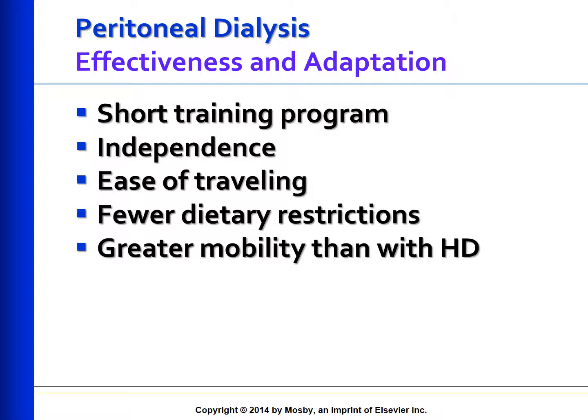In summary, dialysis is of two types: peritoneal and hemodialysis. In peritoneal dialysis, the peritoneal membrane acts as the semi-permeable membrane. There are three phases in a PD cycle: the inflow or fill stage, the dwell phase, and the drain phase — together referred to as one exchange. The main complication associated with peritoneal dialysis is infection, especially exit site infection. Peritoneal dialysis is simple, home-based, and allows the patient greater independence than hemodialysis.